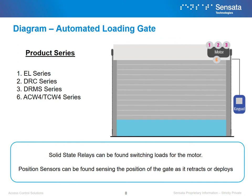Shown here is one example of an automated loading gate and where our various solutions can be found in that system. Our solid state relays can be found switching the loads for the motor that rolls the gate shut or open. The DRMS series can be particularly useful in gate systems that are operated frequently to maximize motor lifetime. Position sensors can be found sensing the position of the gate as it retracts or deploys, ensuring that jamming does not occur.